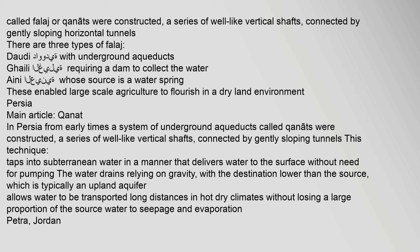In Persia, from early times, a system of underground aqueducts called qanats were constructed — a series of well-like vertical shafts connected by gently sloping tunnels. This technique taps into subterranean water in a manner that delivers water to the surface without need for pumping. The water drains relying on gravity, with the destination lower than the source, which is typically an upland aquifer. This allows water to be transported long distances in hot, dry climates without losing a large proportion of the source water to seepage and evaporation.